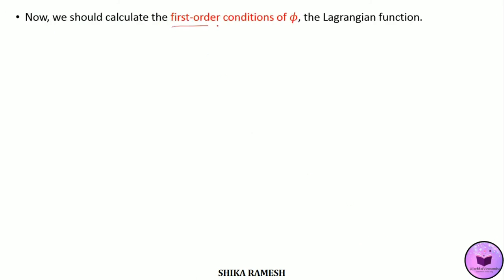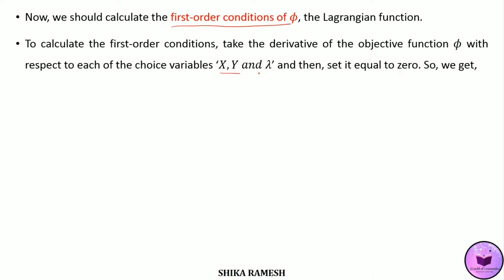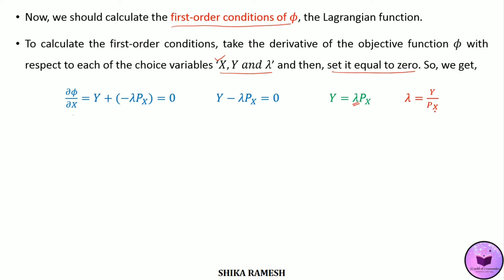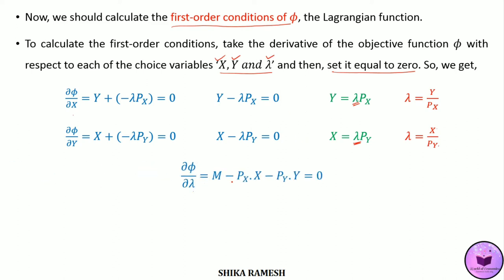We calculate the first order conditions of the Lagrangian function with respect to x, y, and lambda, then set them to zero. Differentiating with respect to x: del phi by del x equals y minus lambda Px equals zero, giving y equals lambda Px, so lambda equals y by Px. Differentiating with respect to y: del phi by del y equals x minus lambda Py equals zero, giving x equals lambda Py, so lambda equals x by Py. Differentiating with respect to lambda gives m minus Px times x minus Py times y equals zero. Equating the lambda expressions: y by Px equals x by Py.